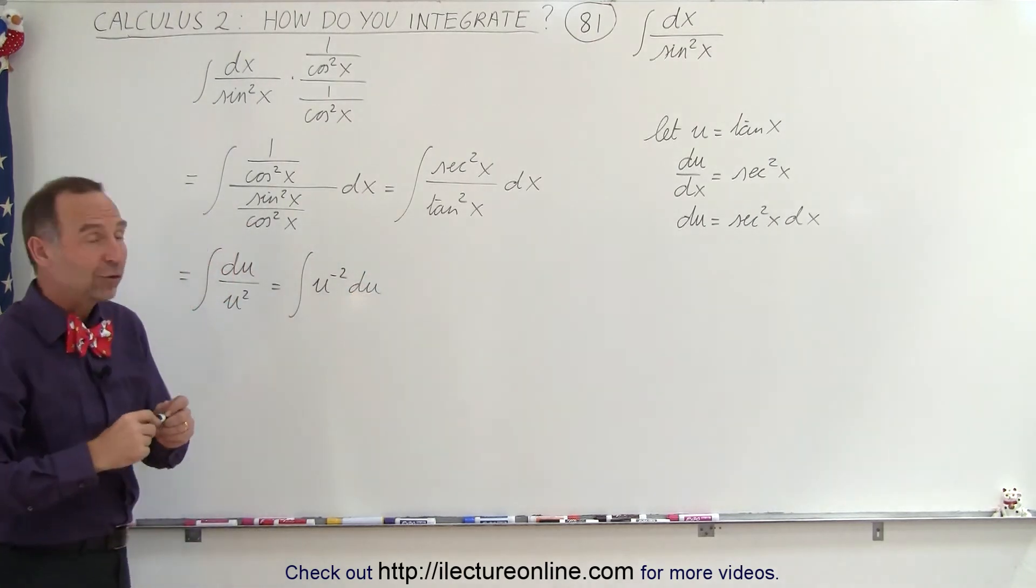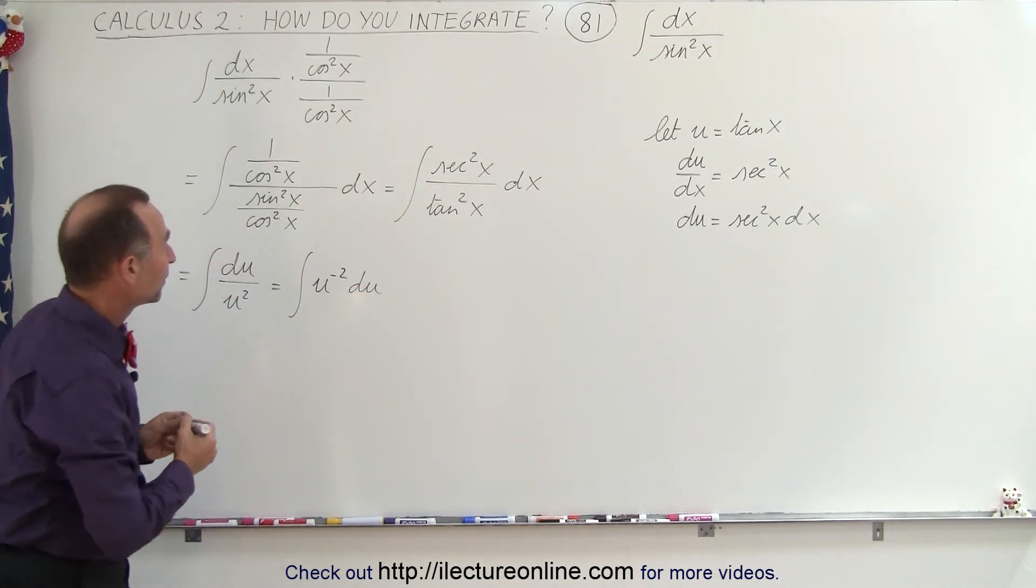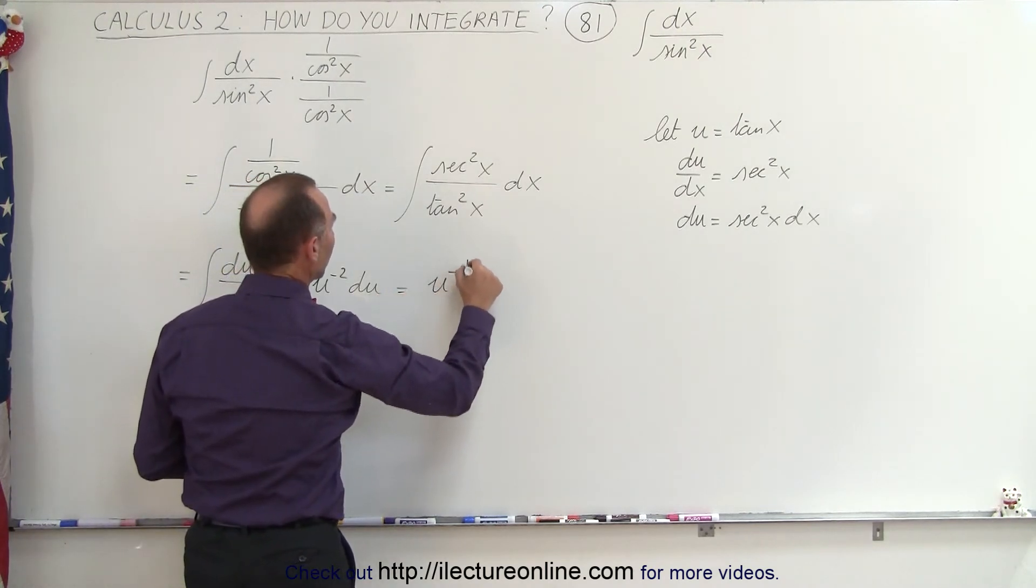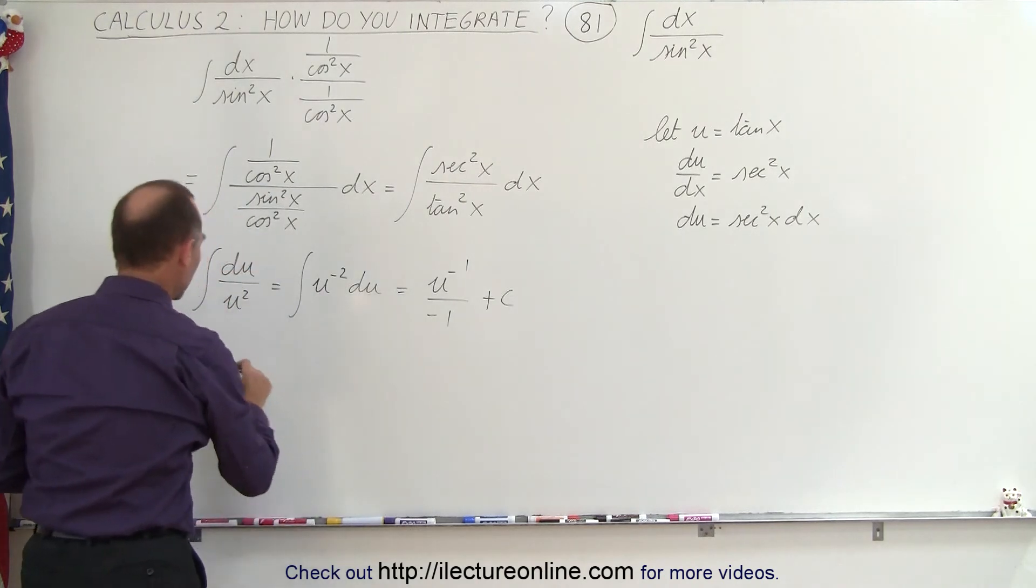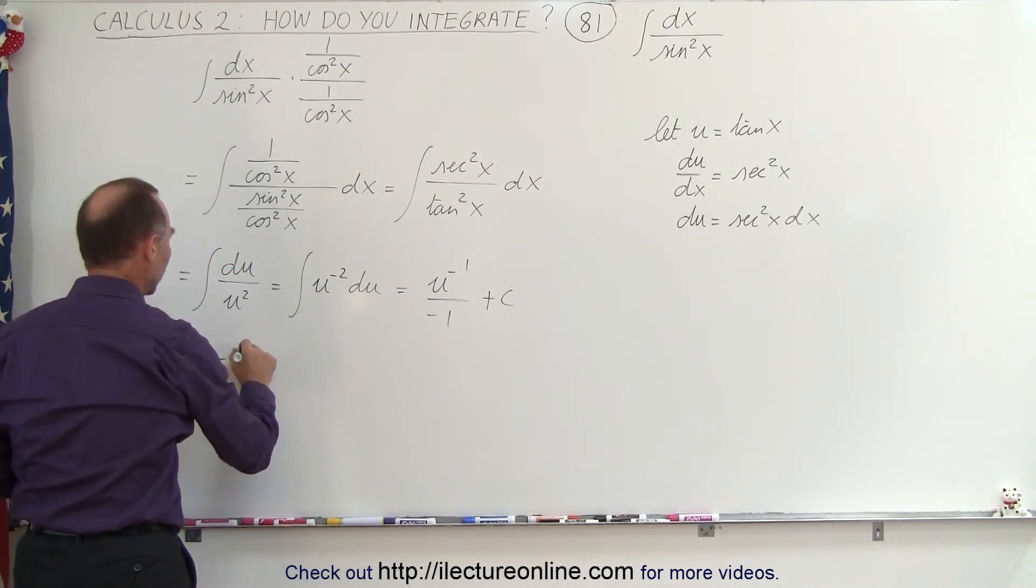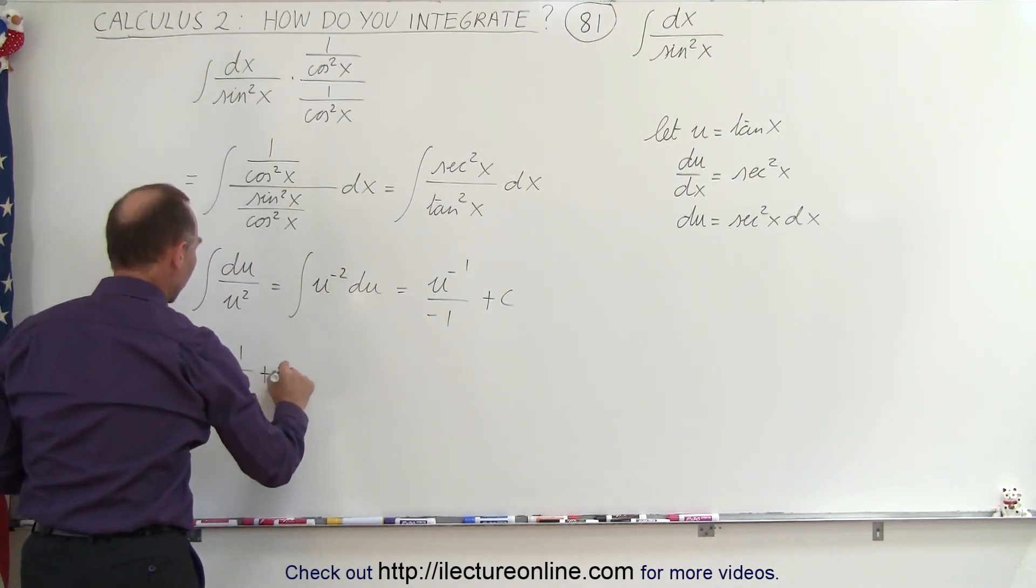And that, of course, is a very straightforward integral to integrate. This becomes equal to u to the minus 1 divided by the new exponent plus a constant of integration, which means that this is equal to minus 1 over u plus a constant.